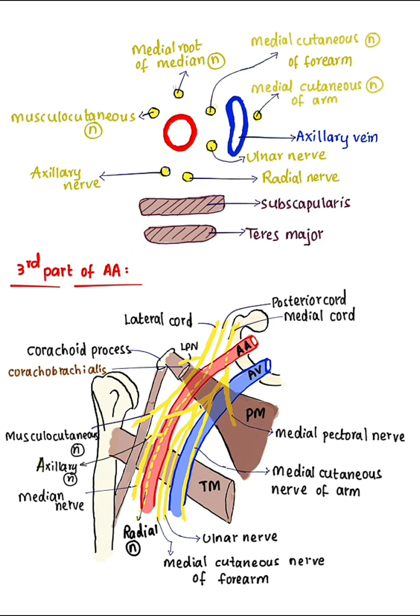Anteriorly, there is the medial root of the median nerve. Medially, the axillary vein lies medially. Between the axillary artery and the axillary vein, the medial cutaneous nerve of the forearm and ulnar nerve are present. Medially: medial cutaneous nerve of forearm, ulnar nerve, axillary vein, and medial cutaneous nerve of arm.